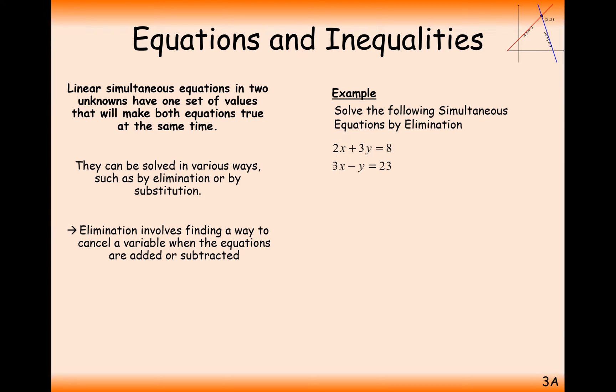First I'll check the x's, there's nothing that I can times 2 by to get to 3, but I can times minus 1y to get to 3y or minus 3y. So I'll times the second equation by the number 3, and I'll have to times the whole equation by that number 3 so it's still the same equation. So here I get 9x minus 3y equals 69.